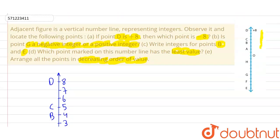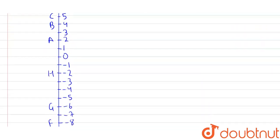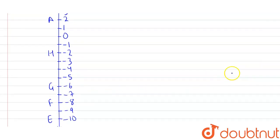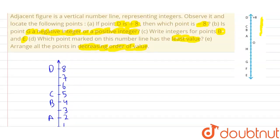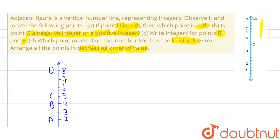Now, let's see the different parts of the question. First part, the A part, tells us if point D is positive 8, then which point is -8. Now, as you can see that -8 is F. Therefore, F represents -8.